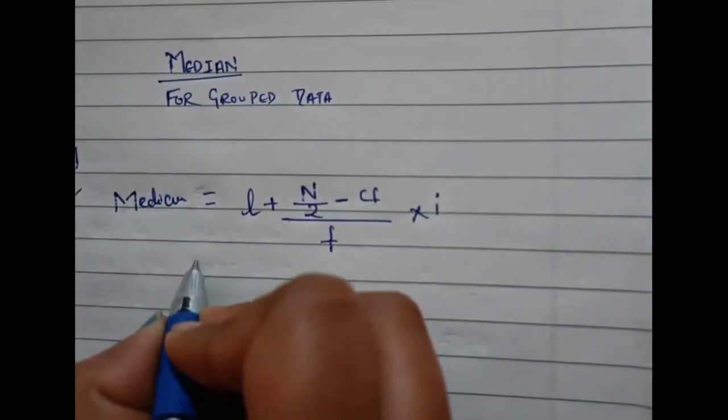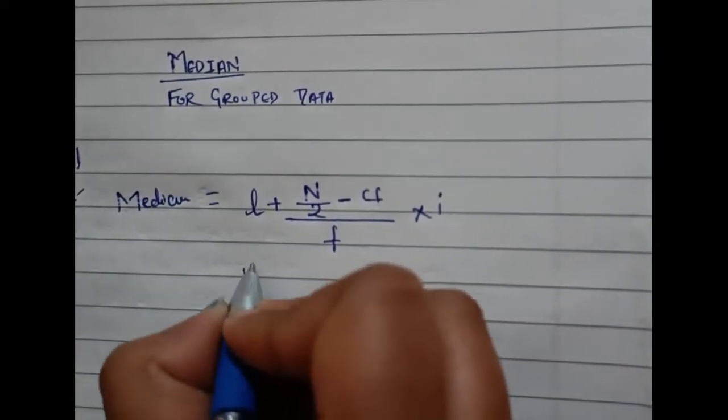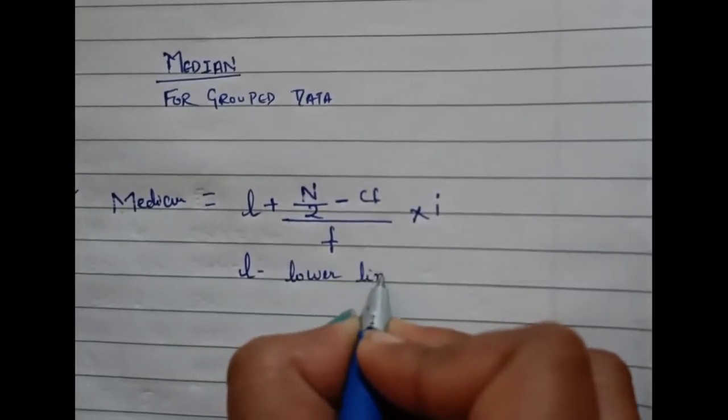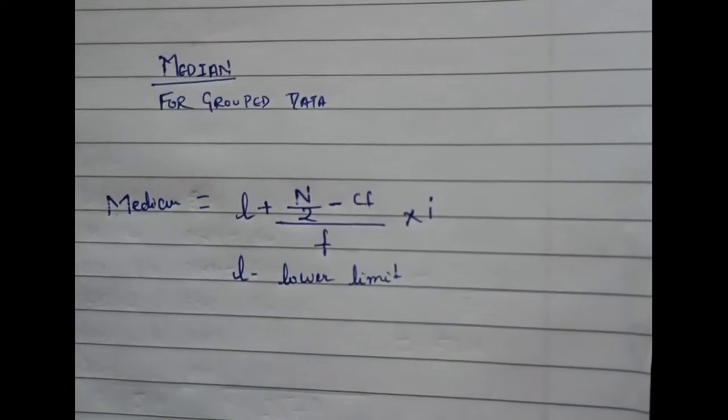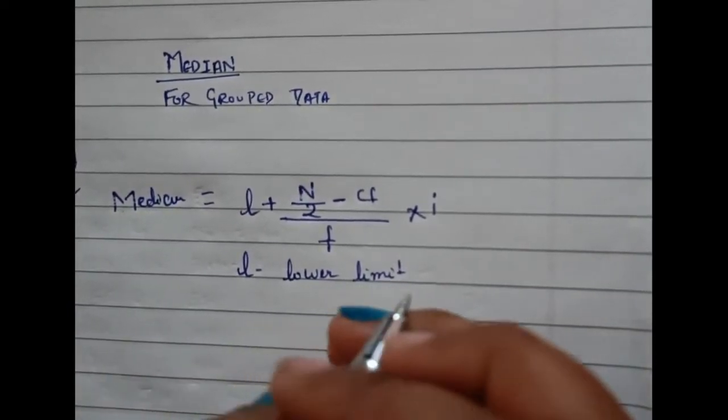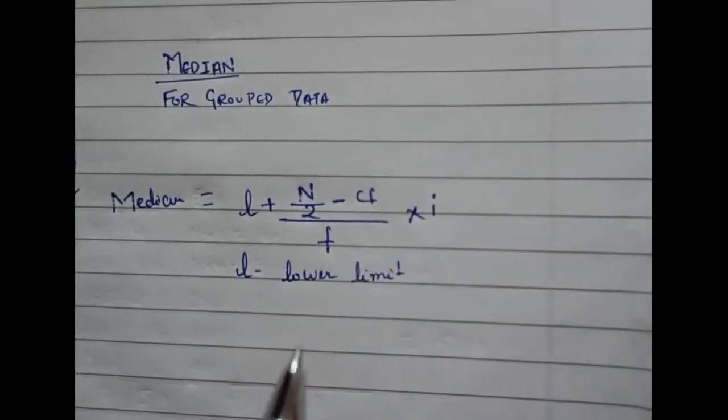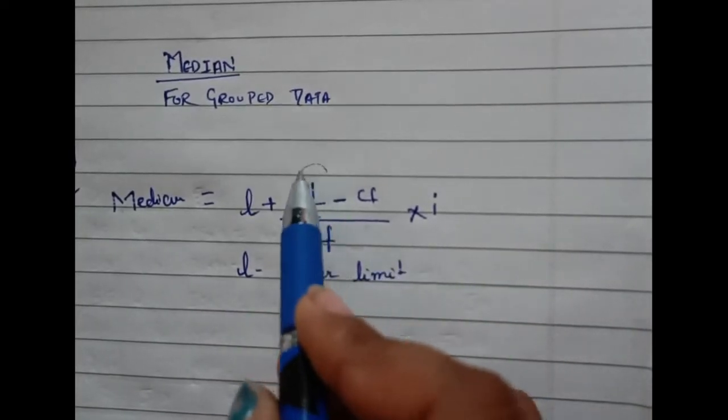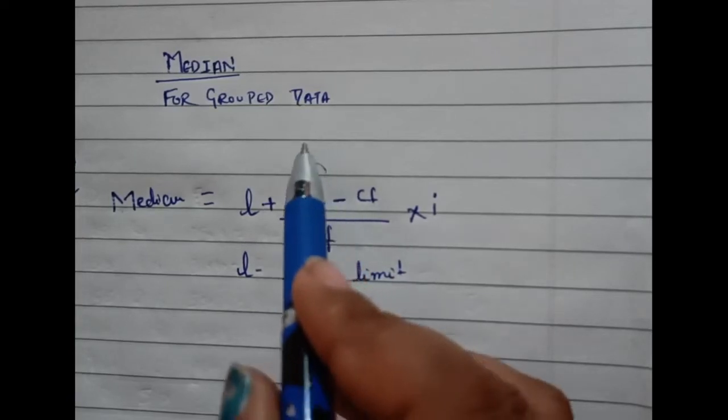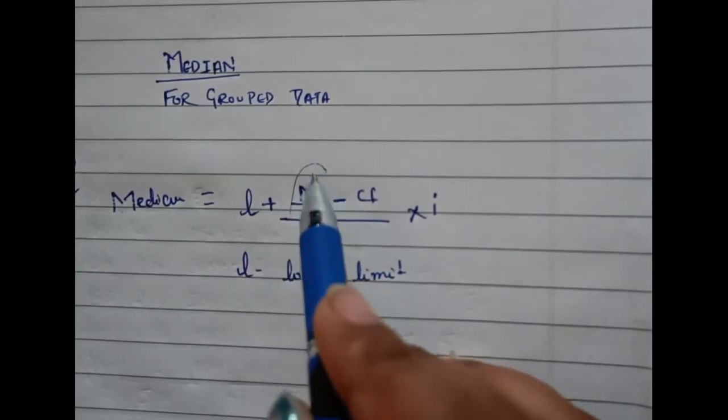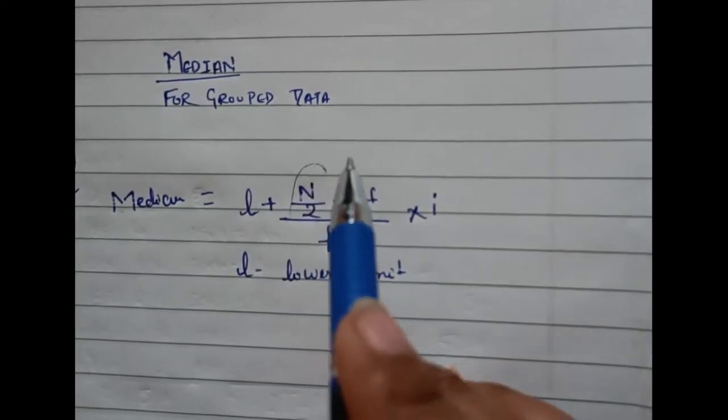L is the lower limit of the median class. First of all, what we have to do is find the median class. What we'll do? We'll divide the total number by 2—the total frequency by 2—and we'll find where this n by 2 is lying.